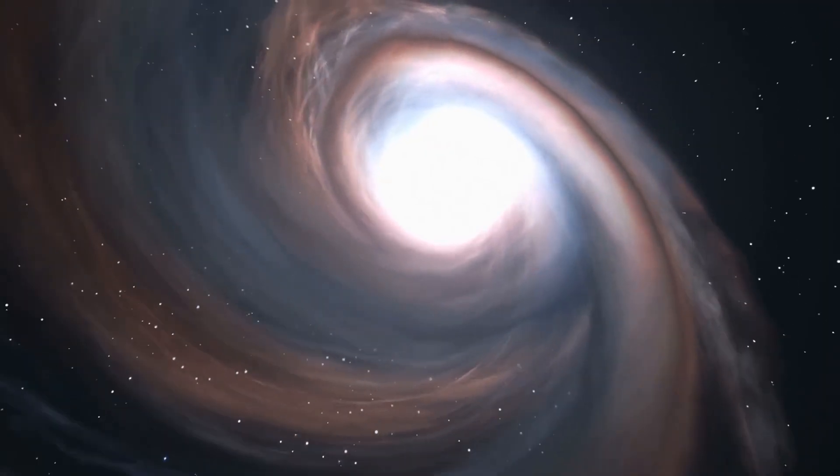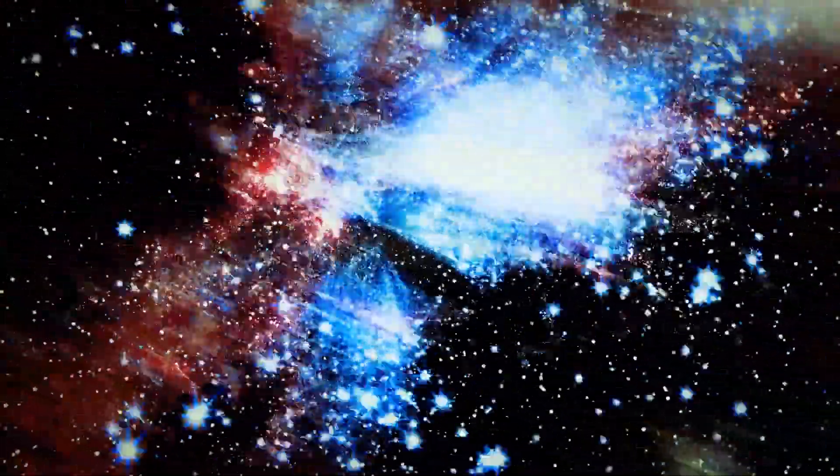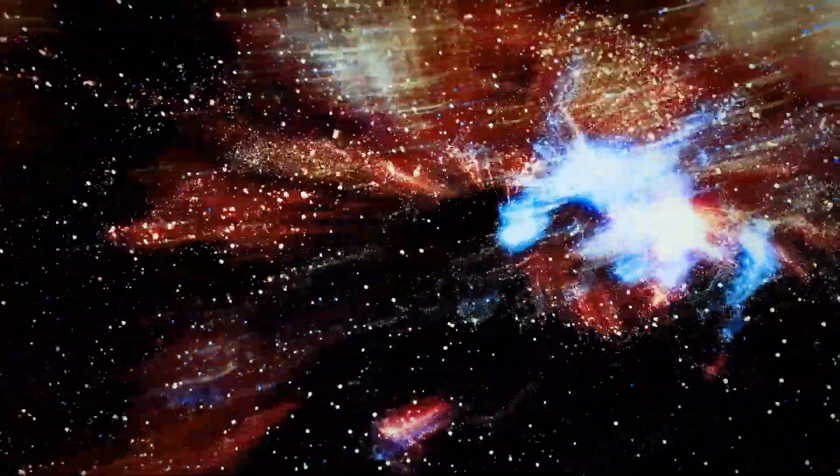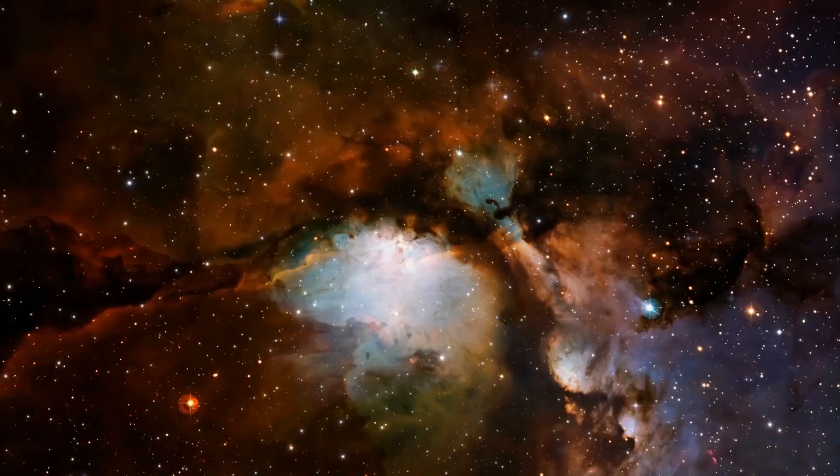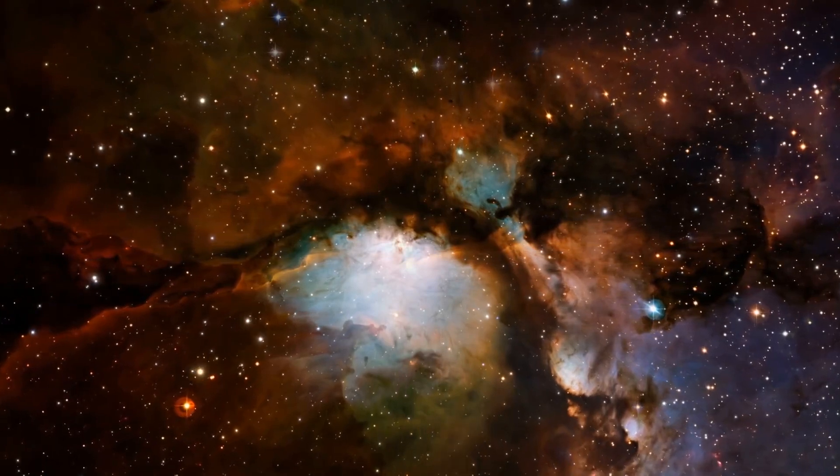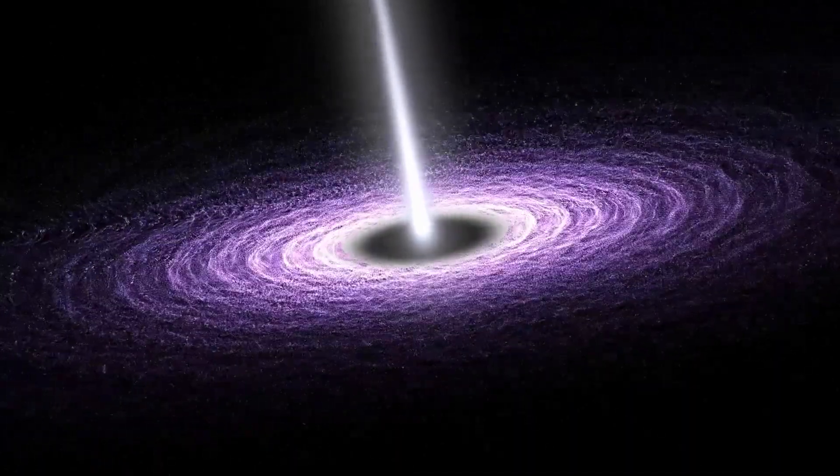These gravitational behemoths possess an intense gravitational pull so powerful that not even light, the fastest entity in the cosmos, can escape their clutches. Black holes come in various sizes, from stellar mass ones formed from collapsed stars to supermassive ones lurking at the centers of galaxies, with masses equivalent to millions or billions of suns.